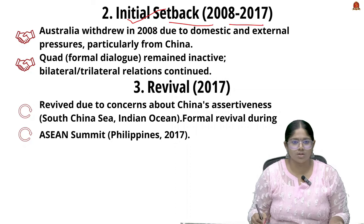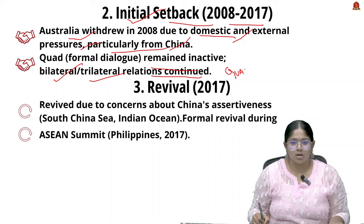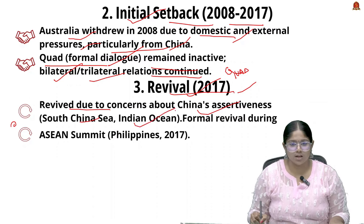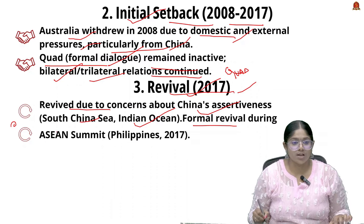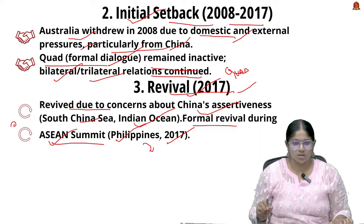After formation, there were initial setbacks. In 2008, Australia withdrew from the Quad due to domestic and external pressures, particularly from China. Until 2017, the Quad remained largely inactive, though bilateral and trilateral relations continued among the members without formal dialogue. In 2017, the Quad was revived strongly due to concerns about China's assertiveness in the South China Sea and the Indian Ocean. The revival was formalized at a meeting of the four countries on the sidelines of the ASEAN Summit in the Philippines in 2017, marking the Quad's return to the geopolitical context.